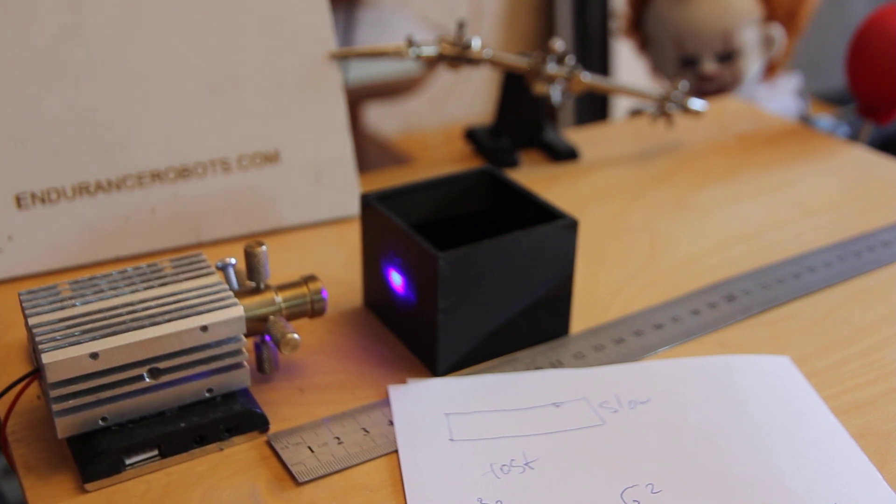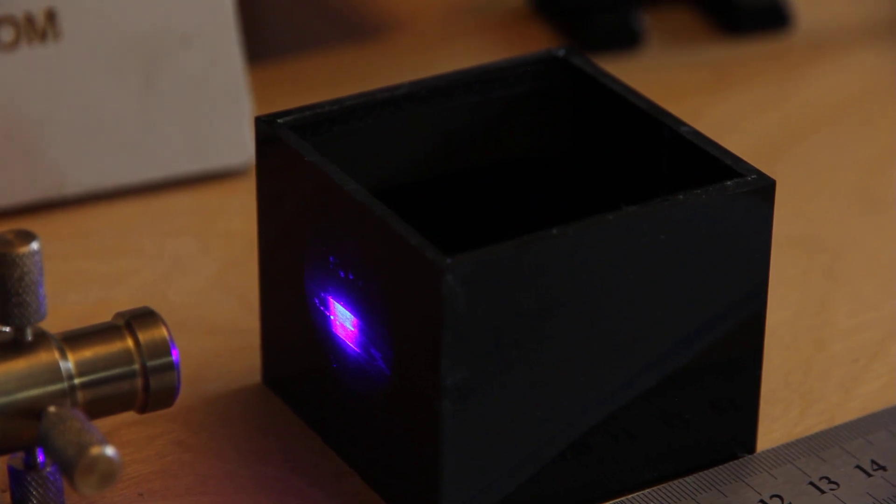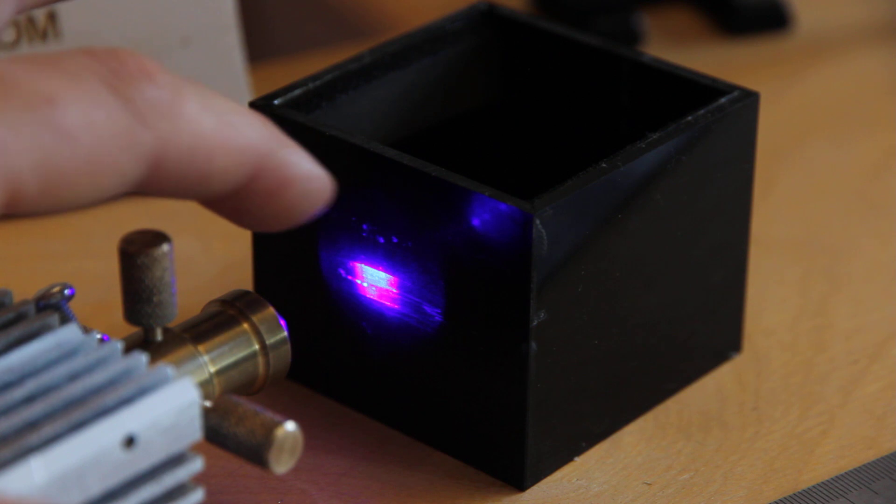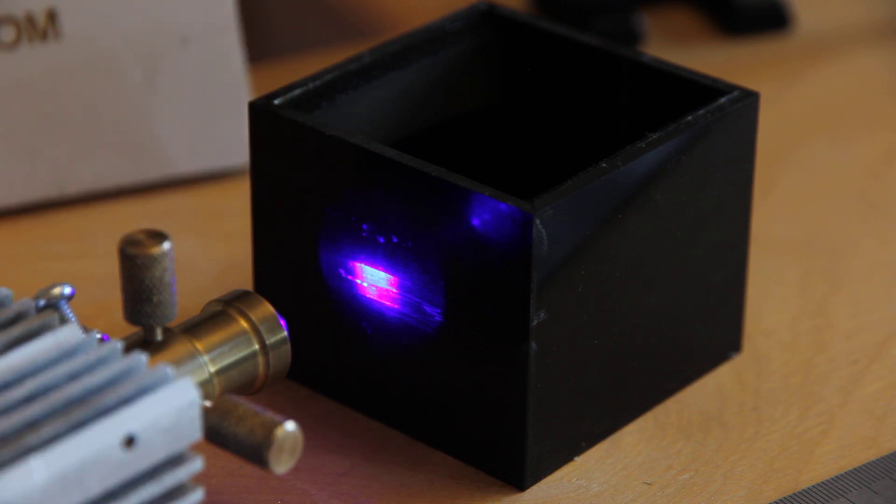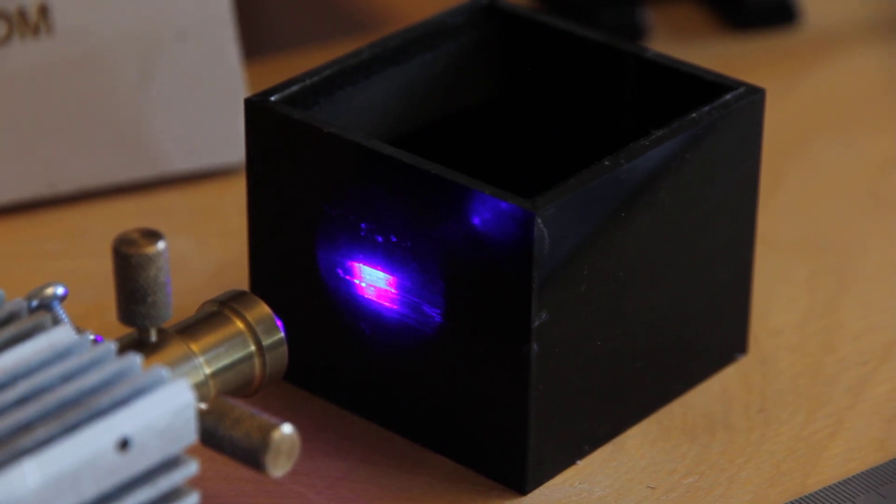So if you make it closer, okay something like this, also like this. So you see that now it looks like a rectangle, almost like a square. Sorry, not a rectangle but a square. So let me add green filter there.